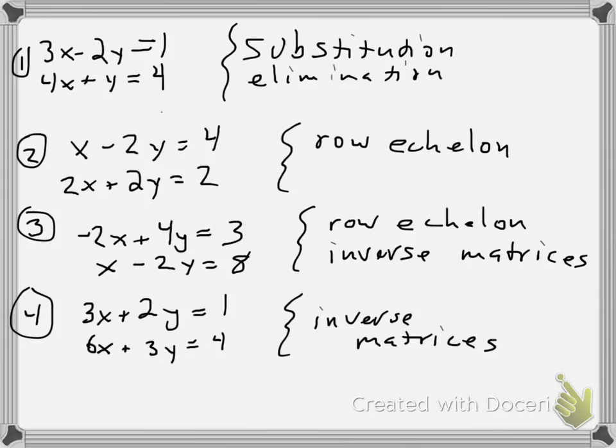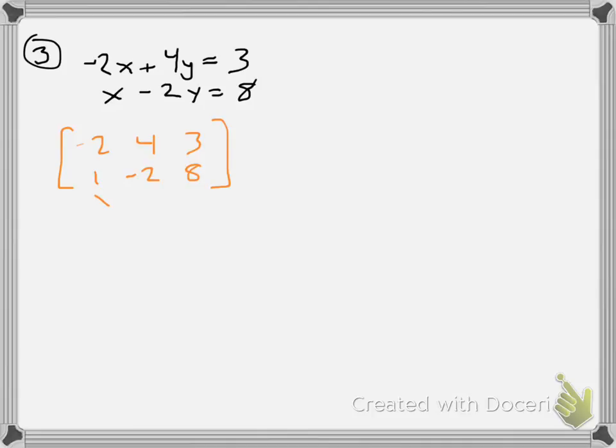Well, let's try number 3. Number 3, I want you to try in two different ways. Row echelon and using inverse matrices. So, row echelon, that's exactly what we just did. We'll have negative 2, 4, 3 and 1, negative 2, 8. So, again, I want this guy to be 0. If I take two of my row 2's and add one of my row 1's, I will get that first term to be 0. Two of these plus one of those. Two of these plus one of these. That's also going to get me 0, isn't it? Oh, yes, it is. And two of these plus one of those will get me 19.